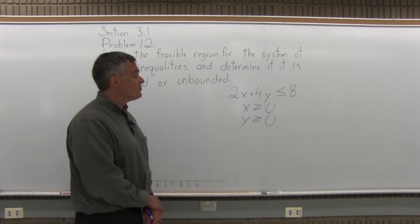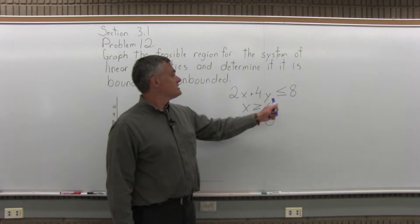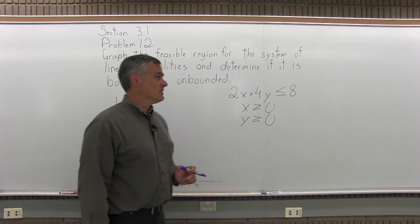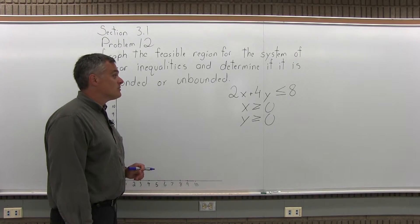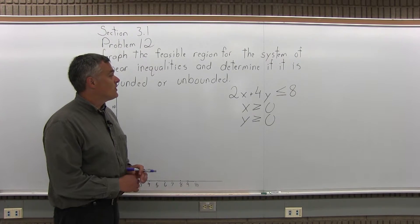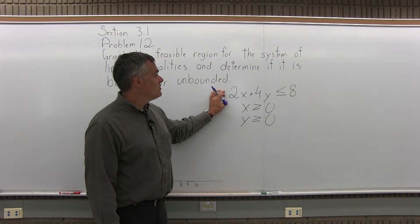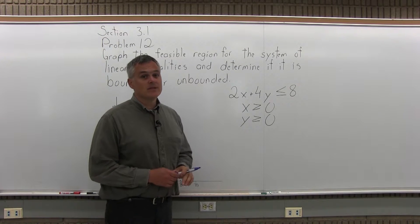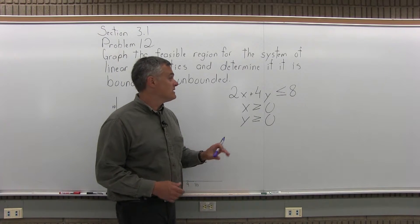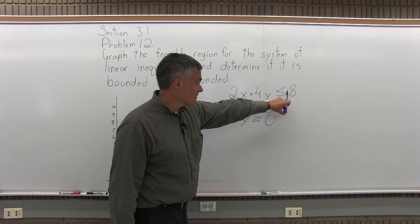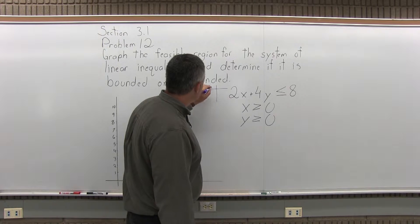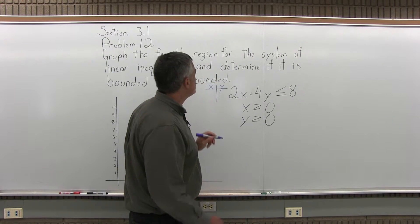This is very similar to the previous problem, except this inequality symbol is a less than. The other one was greater than, so it's going to be somewhat of a similar picture. First, let's focus just on the 2x plus 4y is less than or equal to 8. To graph that, there's a four-step process. Step one is pretend it's equals 8, not less than or equal to 8, and find two points that have x and y values that make the inequality true.